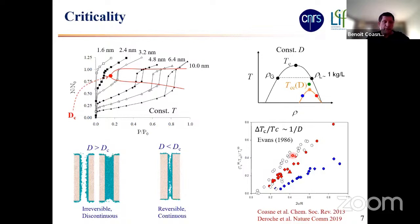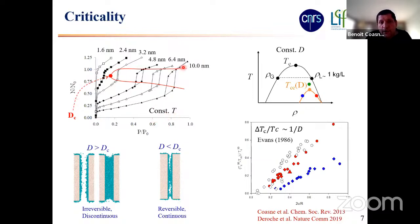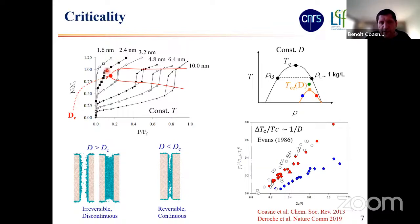Now I want to go one step beyond by looking at the temperature behavior. If we keep constant temperature and decrease the pore size, the hysteresis loop shrinks and becomes narrower. When you enter the regime of zeolitic materials with very small pores, the hysteresis loop disappears, and the adsorption becomes continuous and reversible — you no longer have a jump in the adsorbed amount.